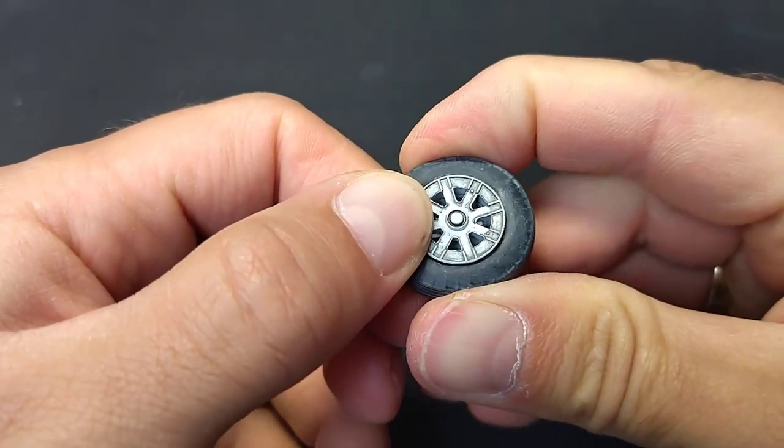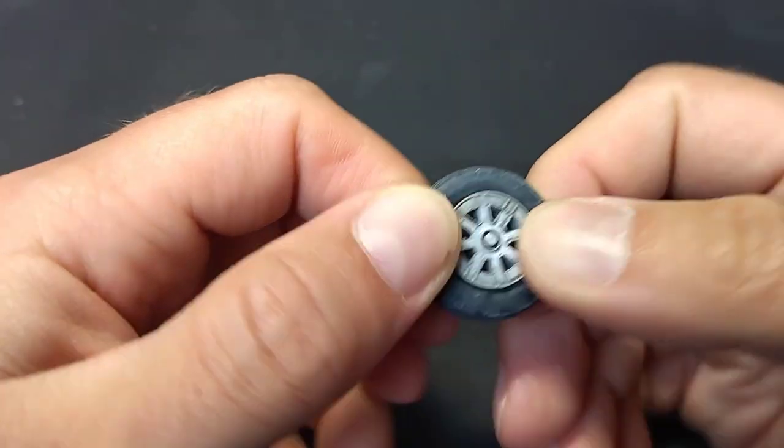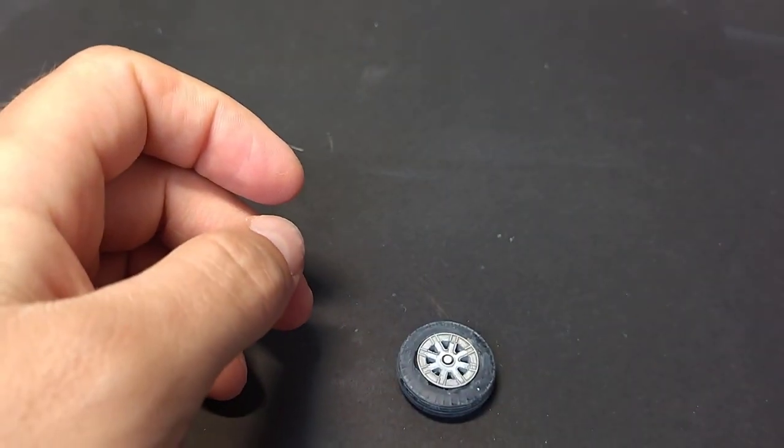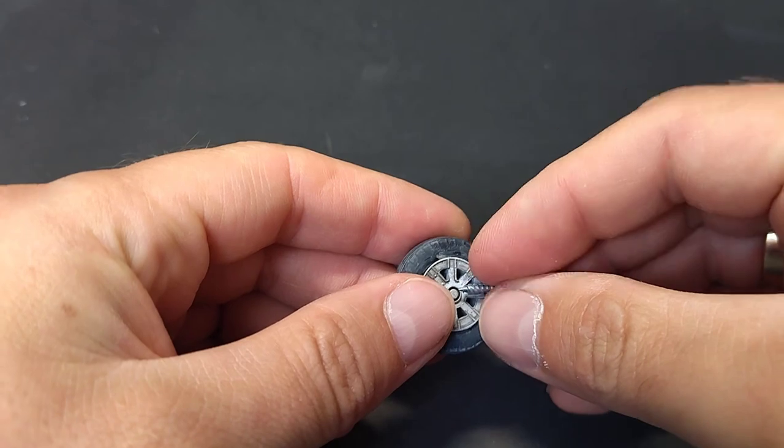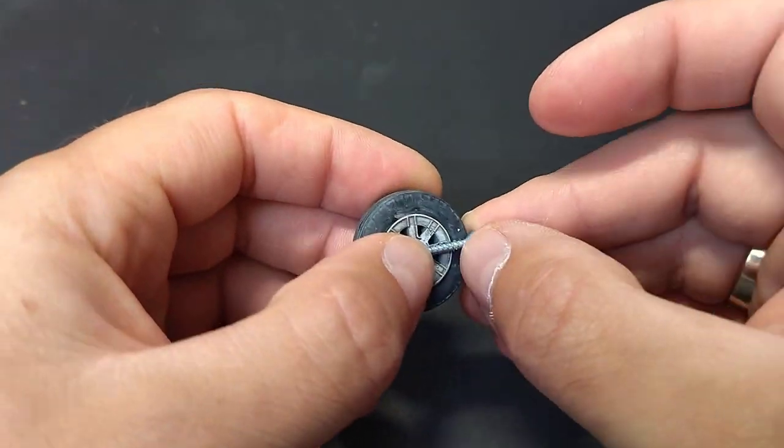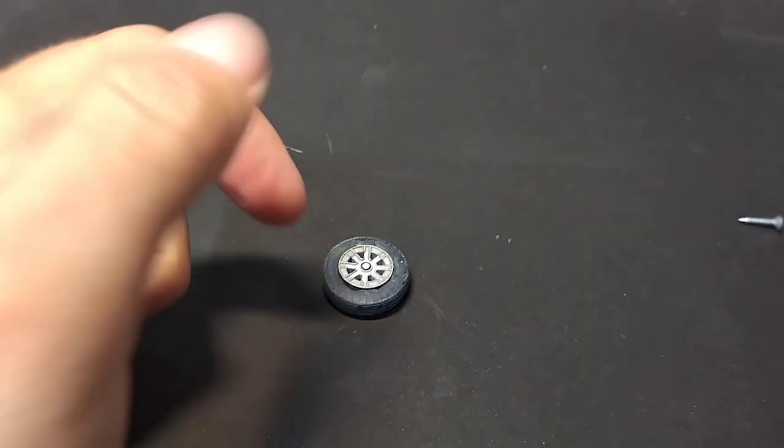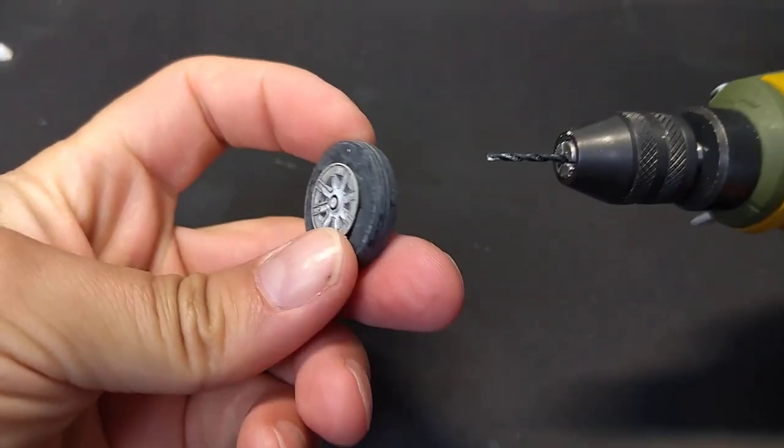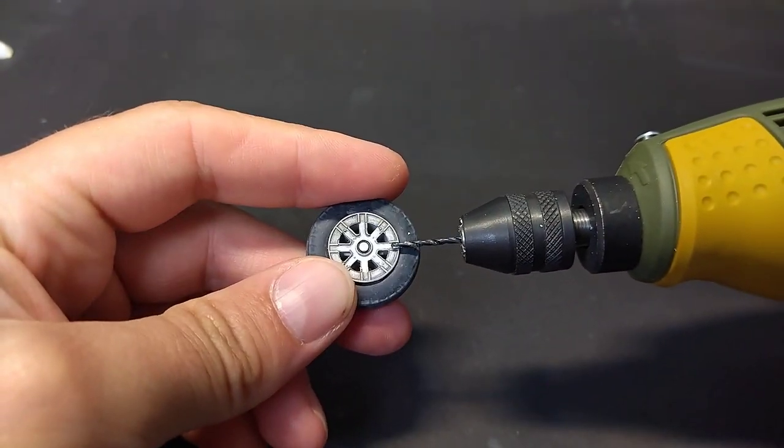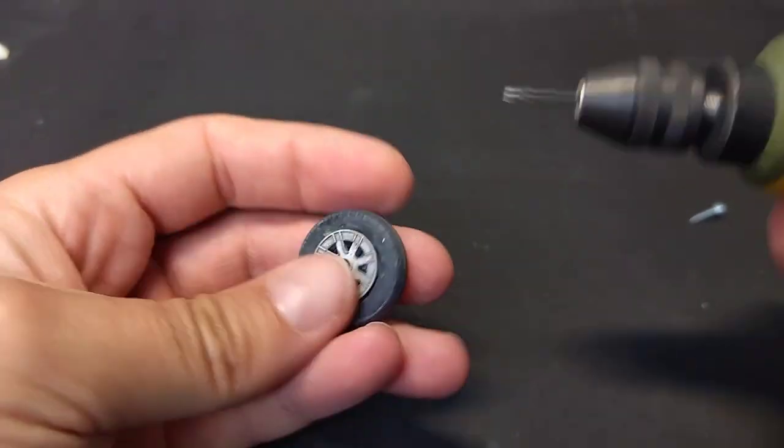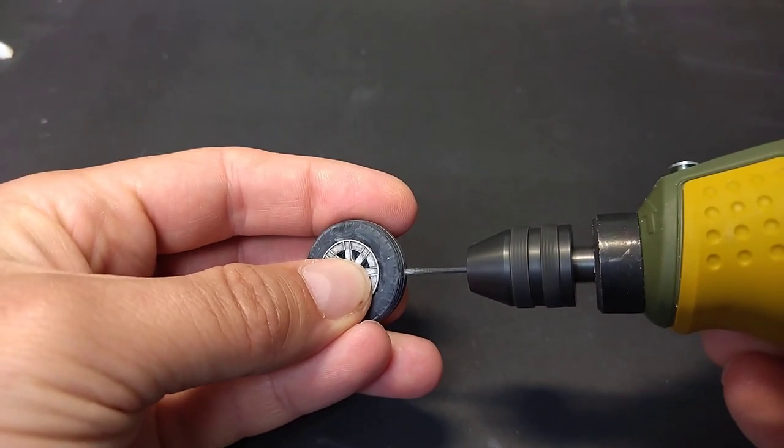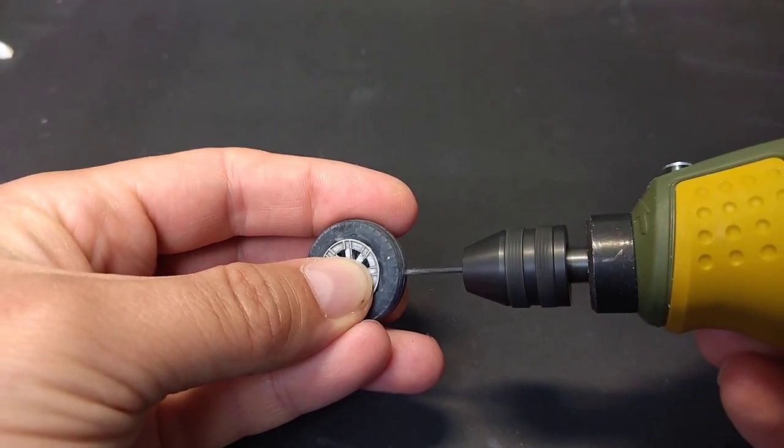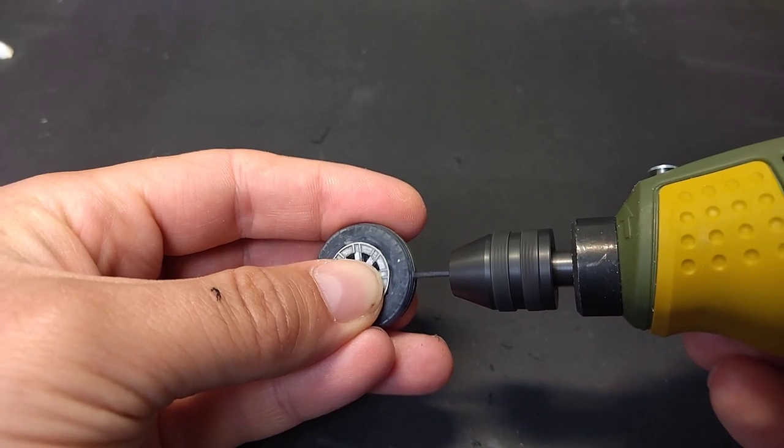But what if the wheel is not plastic, but rubber? Well, if the scale is big enough, here we have the example, the wheel is from Hellcat in 1/32nd scale. You can try to make it flat with the help of a little screw. Unfortunately, I don't have very small ones, but this is the smallest I could find.